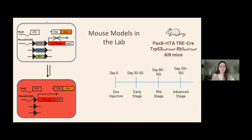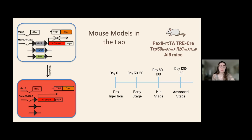For data collection, mouse models were used — more specifically the doxycycline-injected mouse. With doxycycline, the proliferation of tumor cells is inhibited and the stop codon is removed, which allows the Cre factor to be transcribed, playing important roles in cell proliferation, differentiation, and adaptation. There are samples taken from four time points: the point of injection, early stage at 30 to 50 days after injection, mid-stage at 80 to 100 days, and the most advanced samples at approximately 120 to 150 days after injection.